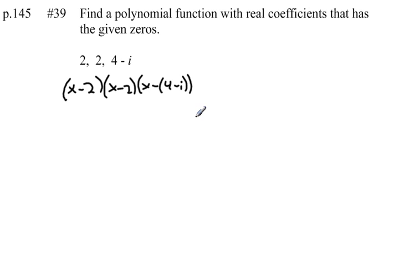Now, we have to be careful here. There's an additional zero and factor that we're not told about, because any time we have a complex number as a zero, we have to have its complex conjugate as a zero also. So 4 plus i is an additional zero, which means x minus 4 plus i is an additional factor.